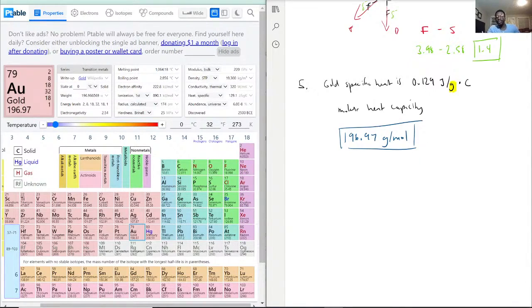Now that we have that, we want the specific heat in molar terms. We first write down our specific heat using grams: 0.129 joules per gram times degree Celsius.